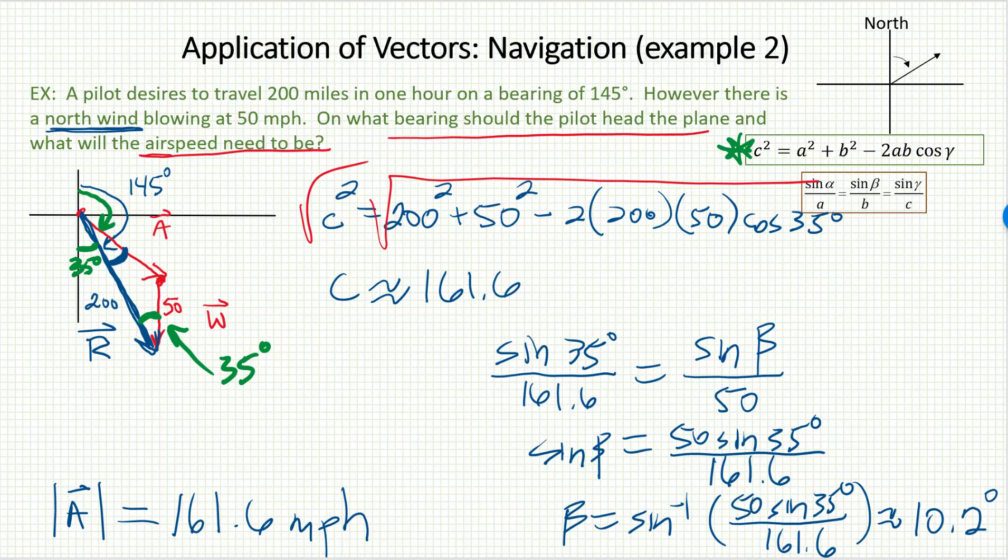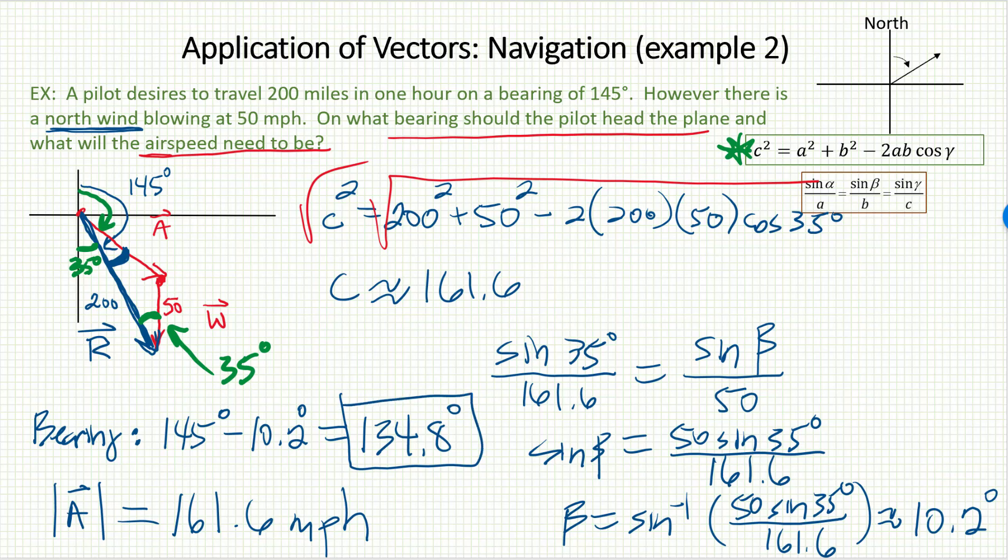The 10.2 is this little blue angle here, so to get the bearing of the airplane, I'll have to take the 145 and subtract off that 10.2 for a final bearing of 134.8 degrees.